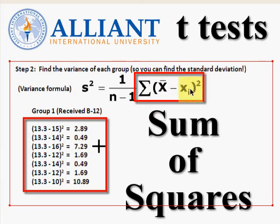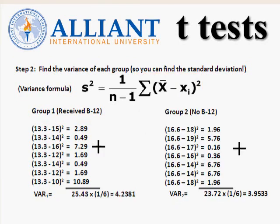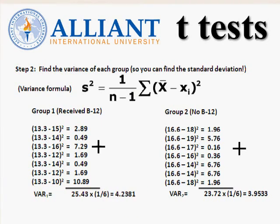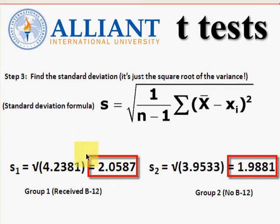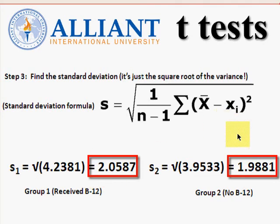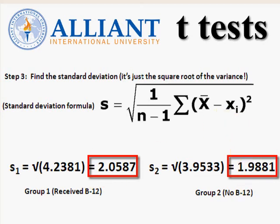Back to the problem. We need to use the sum of squares to find the variance. Here's the variance of the first group and the variance of the second group. We take the square root of the variance to find the standard deviation of each sample. There's the standard deviation from the first group and the standard deviation from the second group. If it's from a sample, we should really be calling it a standard error. But now we have all the information to plug and chug.